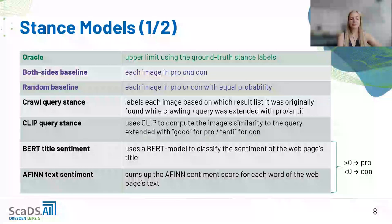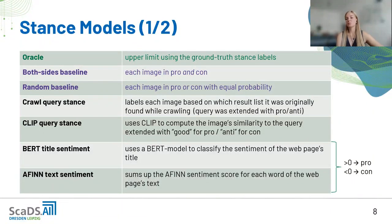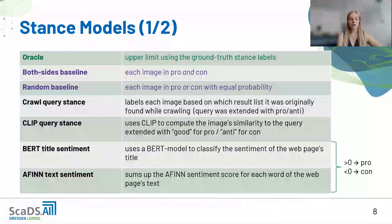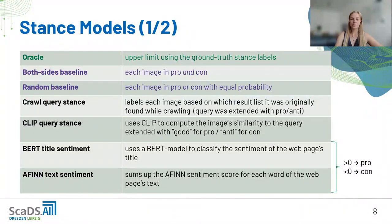The BERT title sentiment model uses a BERT model to classify the sentiment of the web page's title without knowing the query — it checks whether the website is more positive or negative. The AFIN text sentiment model sums up AFIN sentiment scores for each word of the web page's text. Both sentiment models were proposed by the best-performing group in the workshop: if the score is higher than zero it is pro, if lower than zero it is con, and images scoring zero are not further regarded.